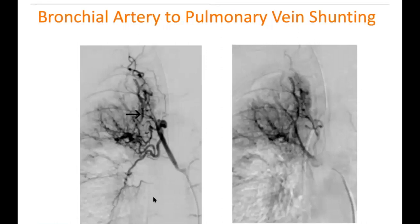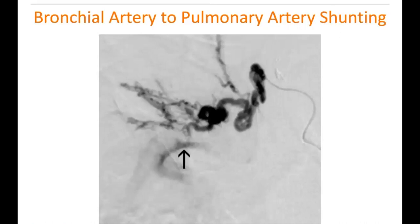If there's shunting, this is what bronchial artery to pulmonary vein shunting looks like. We have the bronchial artery in the arterial phase, and then later in the angiogram we see the pulmonary veins filling — a completely different appearance. For bronchial artery to pulmonary artery shunting, we have this irregular bronchial artery and then can see the outline of the pulmonary artery filling with contrast in a smooth, round course — a very different appearance from the irregular vessel feeding it.